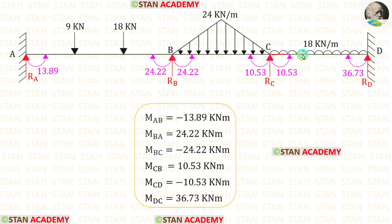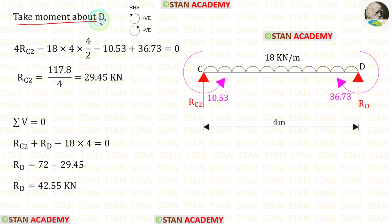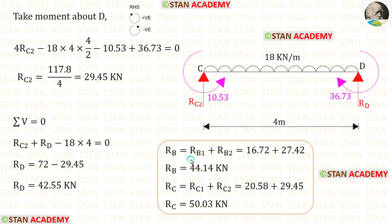For span CD with moment M_CD acting anti-clockwise and M_DC in the clockwise direction, by taking moments about D we find R_C2, and by applying ΣV = 0 we find R_D. At point B, adding R_B1 and R_B2 gives total R_B. Similarly, adding R_C1 and R_C2 gives total R_C.